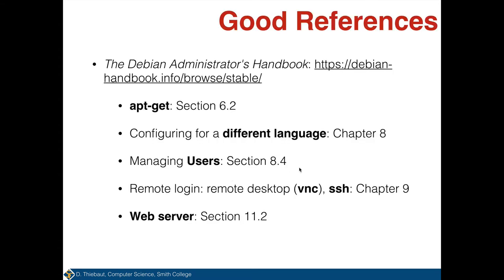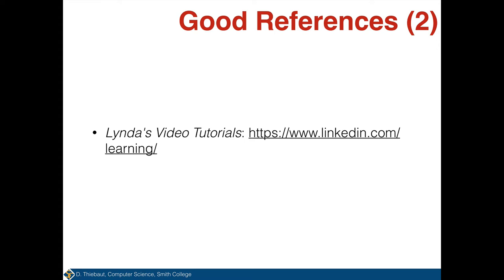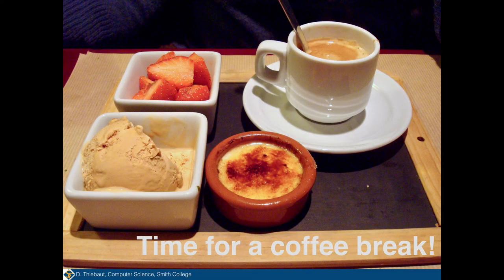There's a very good Debian handbook, and apt-get is the app we'll use to install software on the Raspberry Pi. The handbook covers sections 6.2, chapter 8 section 8.4, chapter 9, and section 11.2 as good references. If you have access to LinkedIn Learning (formerly Lynda), Raspbian has very nice tutorials there as well. This is a good time to take a little break before we continue.